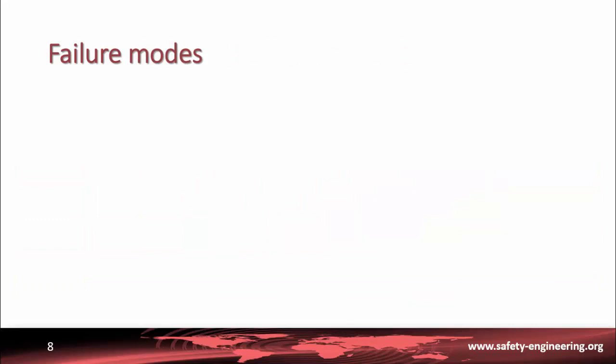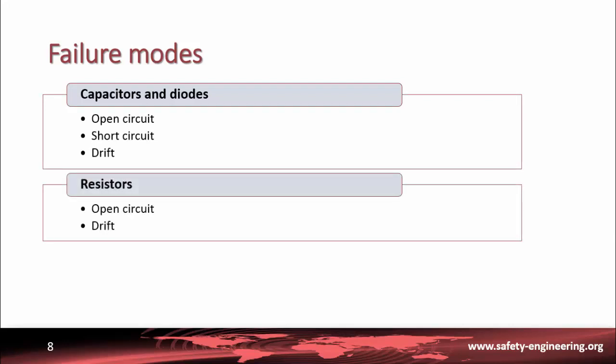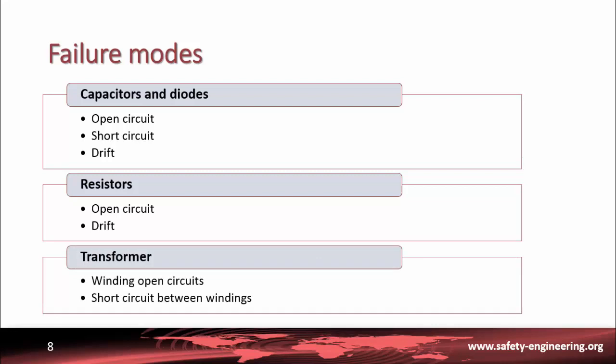We have agreed with our customer that the selected failure modes will be the following ones. For capacitors and diodes, we will consider open circuit, short circuit and drift. For resistors, only open circuit and drift will be considered. For the transformer, we will consider winding open circuits and short circuits between windings.